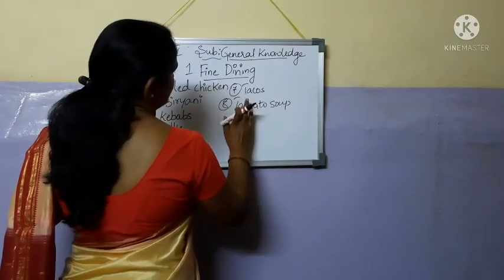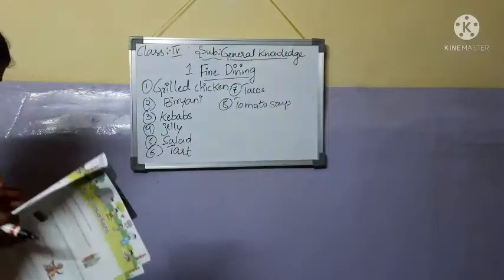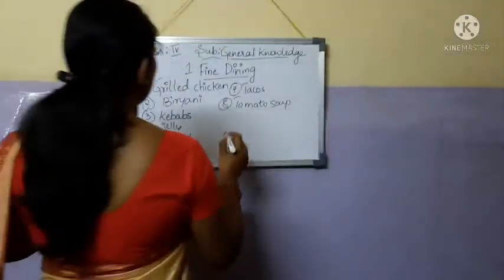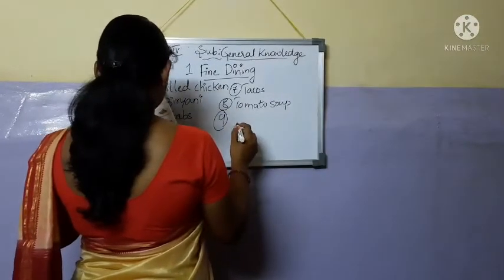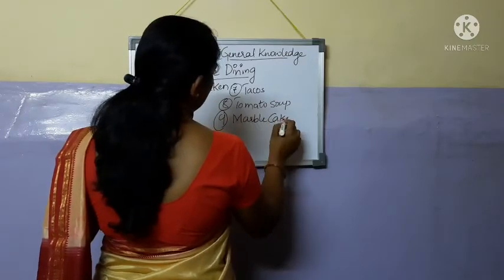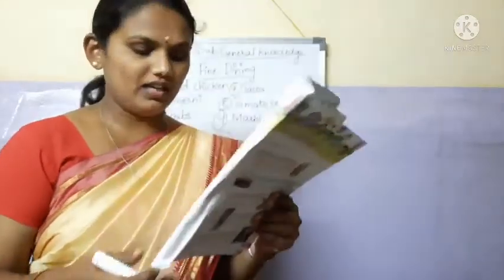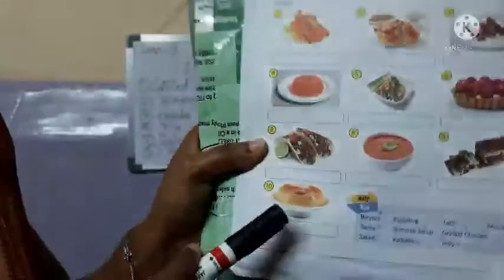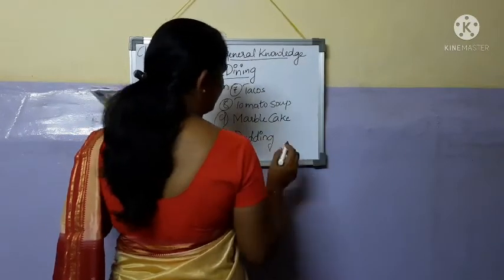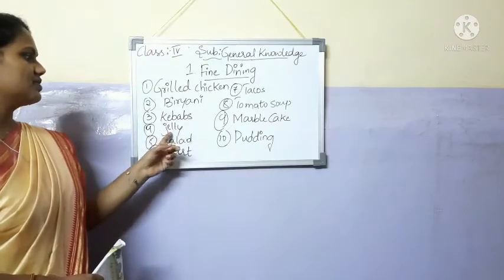They will serve you with papad. The ninth one is marble cake — cake is of different types, like sponge cake, and there will be cream in yellow color. There's also plum cake, which is prepared with fruits. The last one is called pudding — it is a different variety of dessert. So all the answers are: grilled chicken, biryani, kebabs, jelly, salad, tart, tacos, tomato soup, marble cake, and pudding.